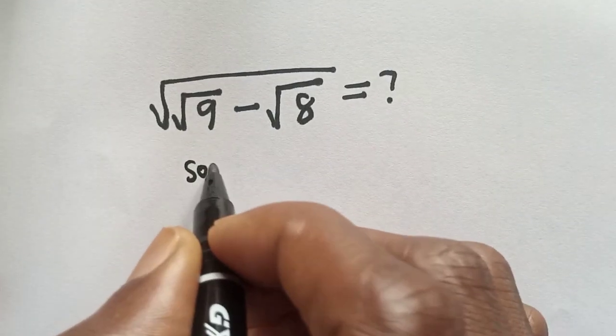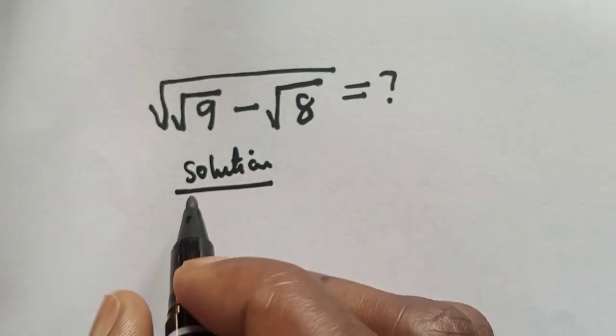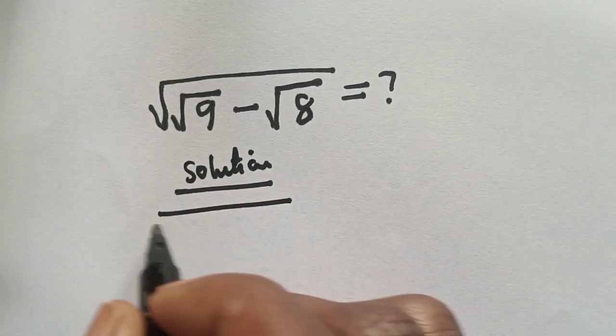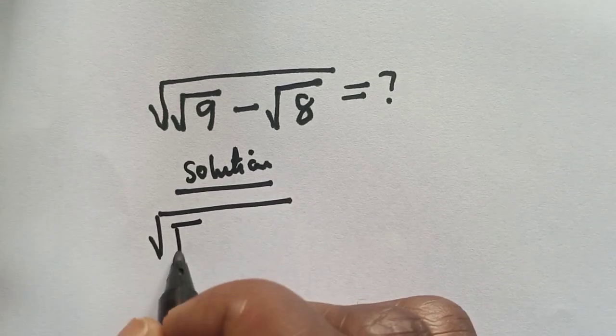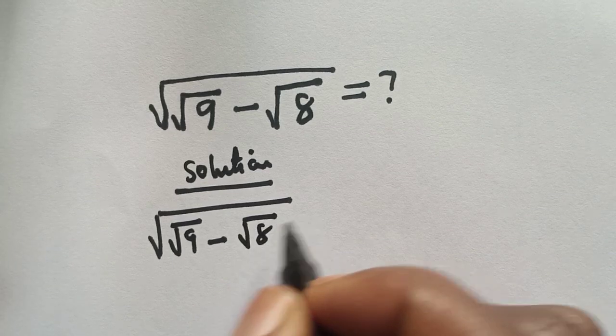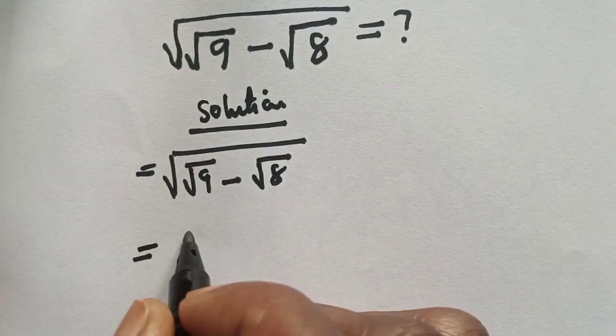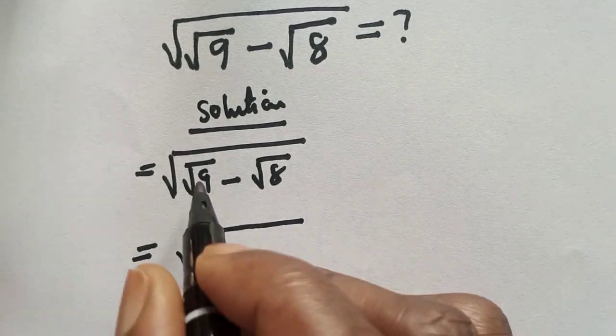Solution: We have square root of root 9 minus root 8. This is equal to square root of square root...